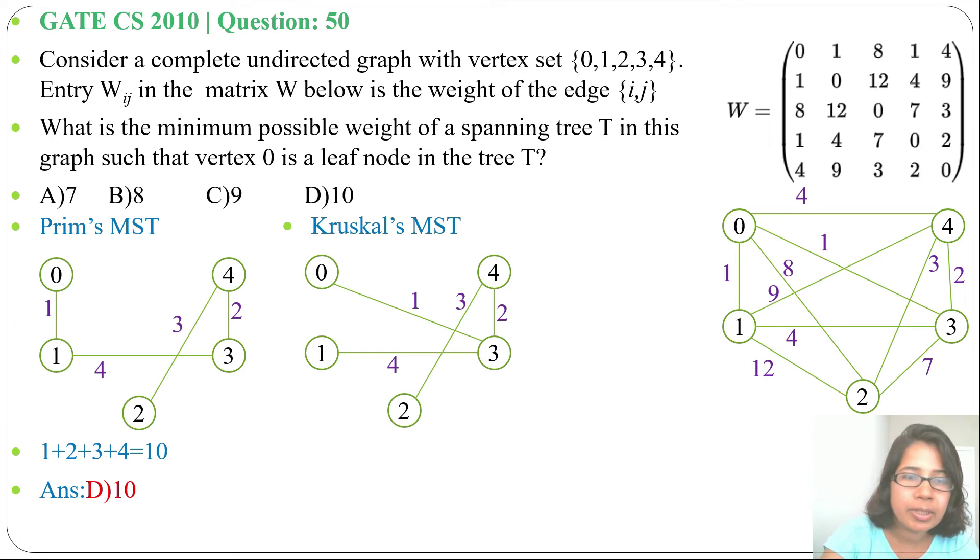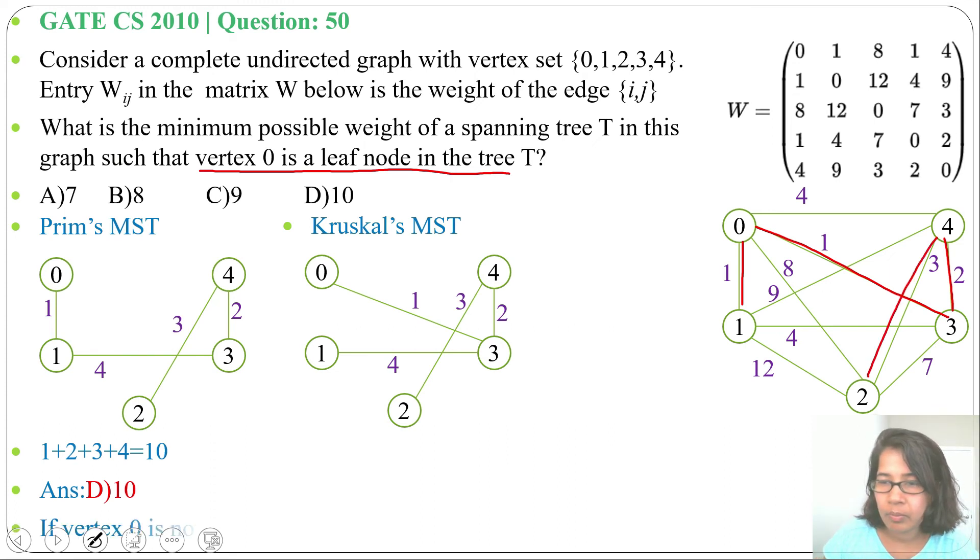Suppose in the question it's not written vertex 0 is a leaf node in the tree, then what will be the cost of the minimum spanning tree? So first we will choose 0 to 1, next we will choose 0 to 3, next we will choose 4 to 3, next we will choose 4 to 2. So total weight will be 1 plus 1 plus 2 plus 3, which will be 7. If we are not creating vertex 0 as a leaf node, then cost of the minimum spanning tree will be 7.